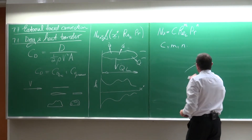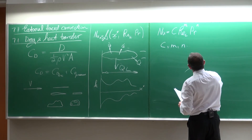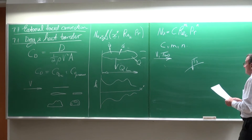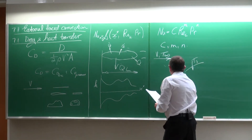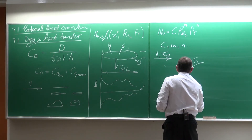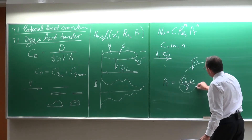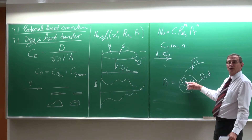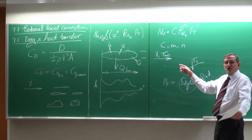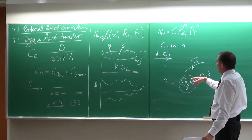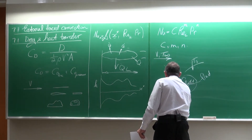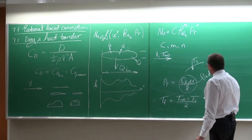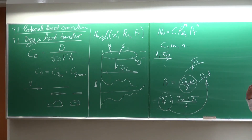An important consideration: if the surface is at temperature Ts and the free stream has a velocity and temperature, the Prandtl number equals Cp times viscosity divided by thermal conductivity — all dependent on the fluid and on temperature. So the question is: which temperature should we use? Normally we define the film temperature Tf, equal to the free stream temperature plus the surface temperature divided by 2, and get fluid properties at that film temperature.